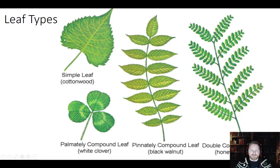So some general leaf types: simple, compound, doubly compound. And there's also a palmate compound leaf, because instead of the rachis being one long piece with leaves coming off of it, there's just one point and the leaflets come off like branches of a palm tree.